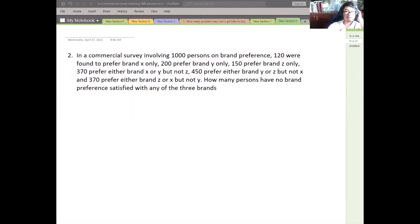The next problem, a commercial survey involving 1,000 persons on brand preference. 120 were found to prefer brand X only, 200 prefer brand Y only, and 150 prefer brand Z only. 370 prefer either brand X or Y but not Z. 450 prefer brand Y or Z only. And 370 prefer either brand Z or X. The question here is how many persons have no brand preference satisfied with any of the three brands?